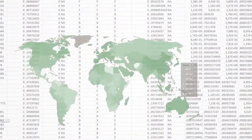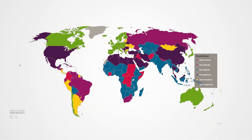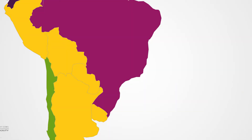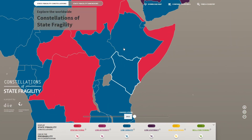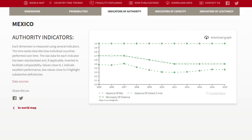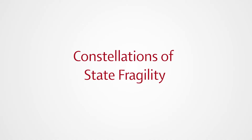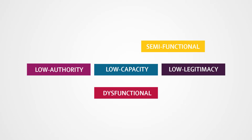When states become fragile, many challenges ensue for international peace, development and sustainability efforts. A new empirical model, database and online tool developed by the German Development Institute offers a nuanced analysis of state fragility. How do the states of the world score in terms of their capacity, authority and legitimacy?